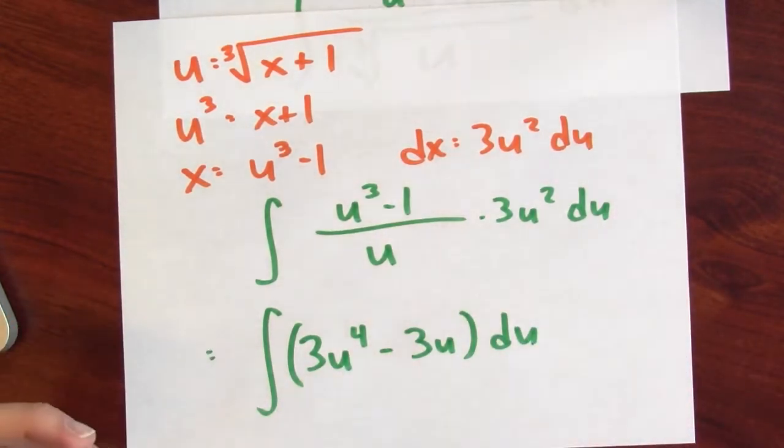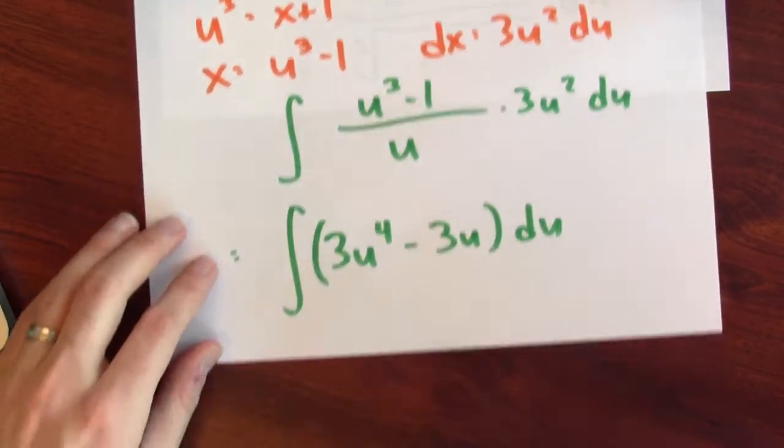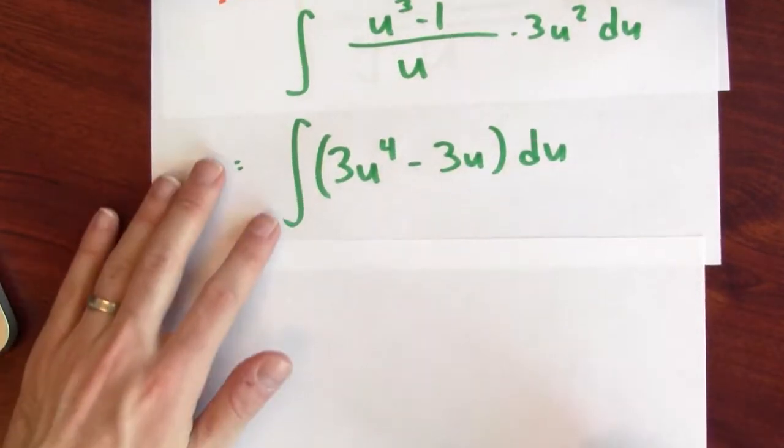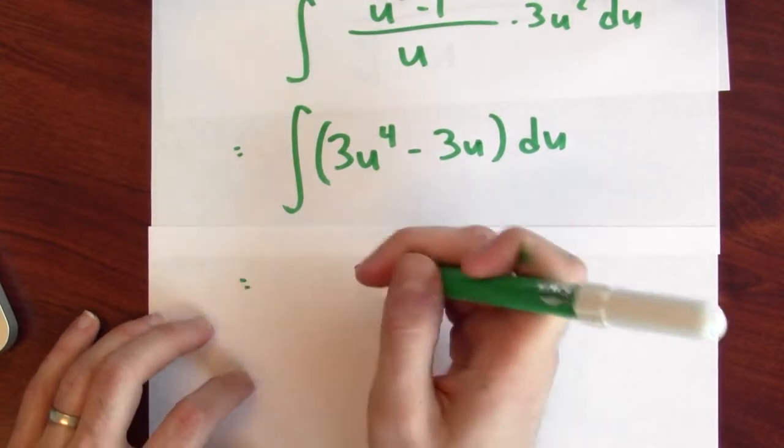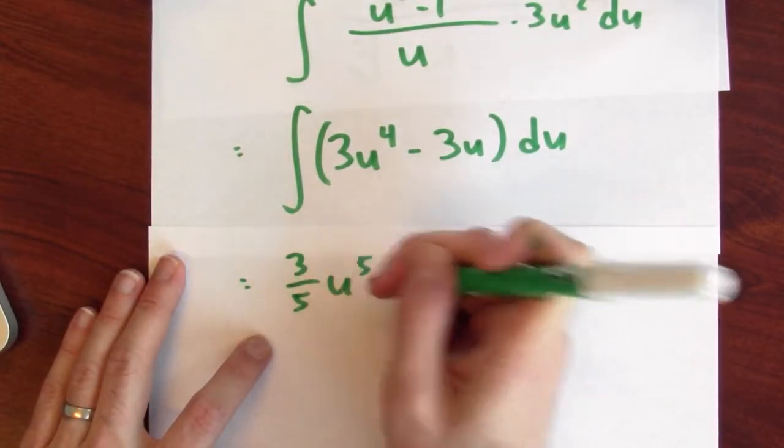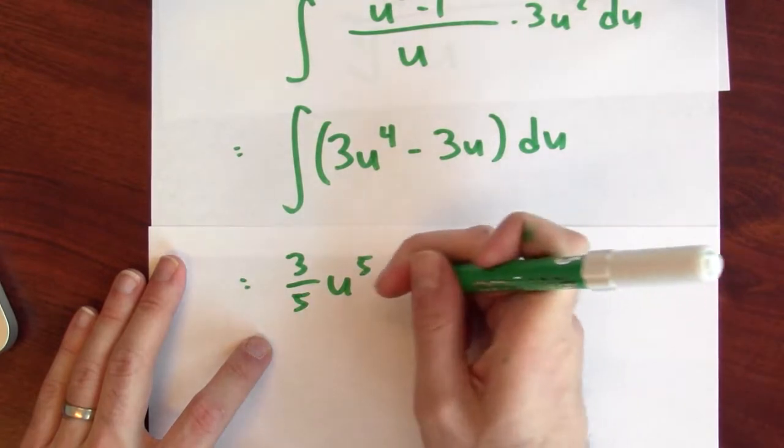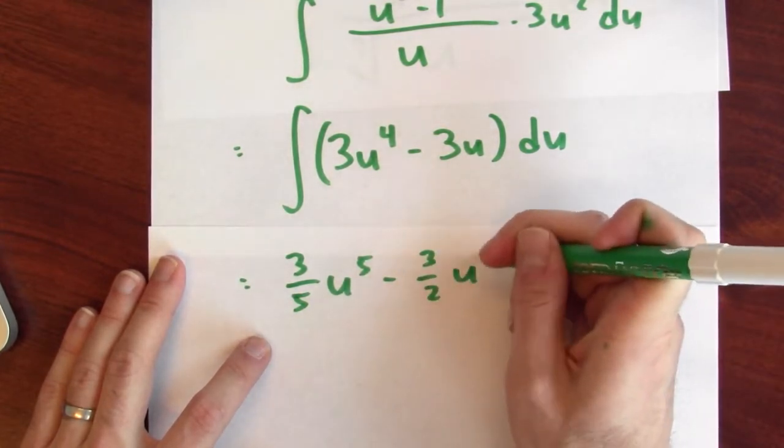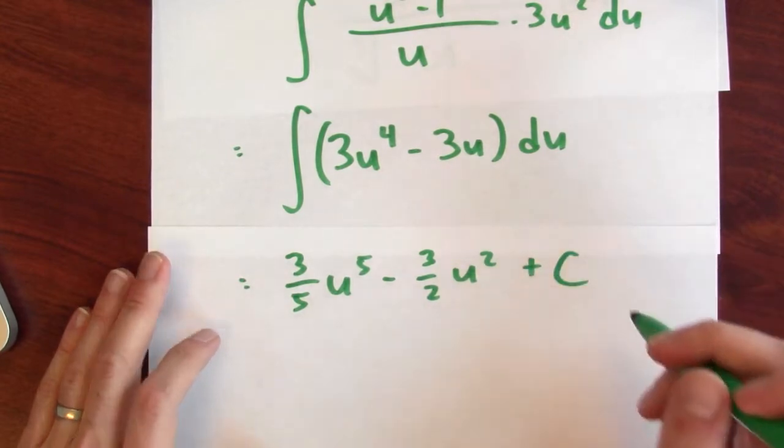And this is just a polynomial. So I can anti-differentiate this very quickly. This anti-derivative is 3 fifths u to the fifth minus 3 halves u squared plus c.